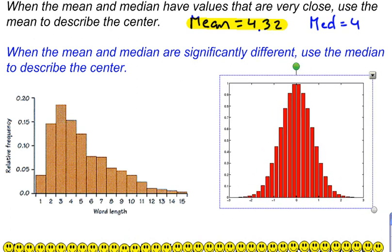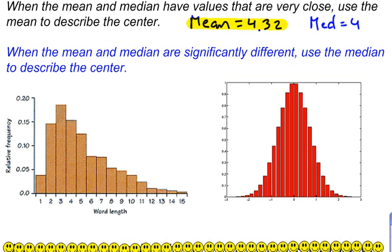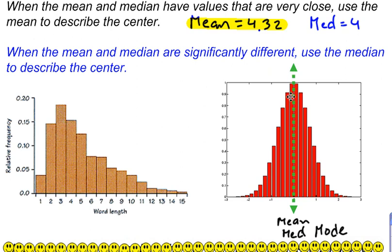Let's start off looking at this distribution. It is bell-shaped and symmetric, or normal shaped, and the center of the distribution is right about here. Our three measures of center are mean, median, and mode, and it just so happens that the mean, the median, and the mode are all at about the center of this distribution, where this green dotted line is. In a bell-shaped or normal distribution, mean, median, and mode are all going to be about the same, and that's why it's okay to use the mean to describe the center, because the mean is the average, and the average is what people are used to most of the time.